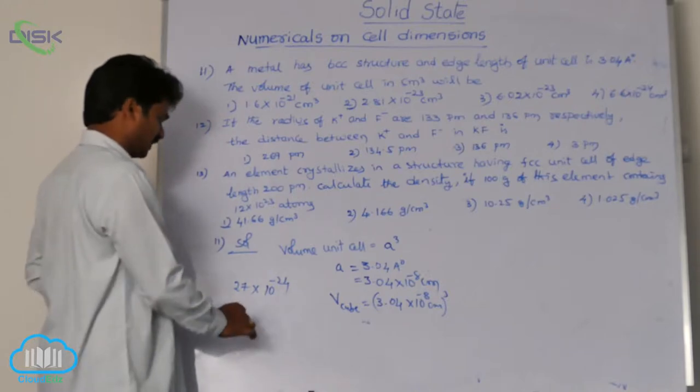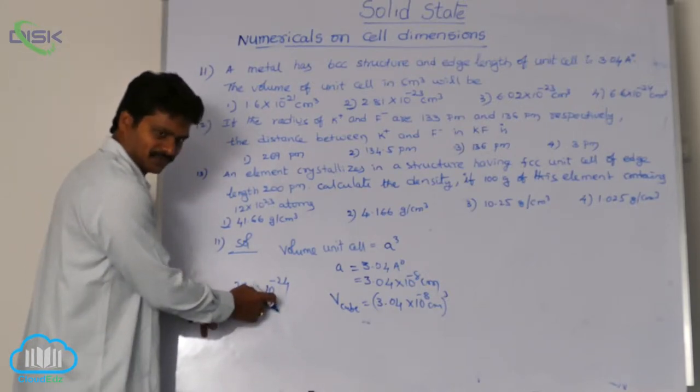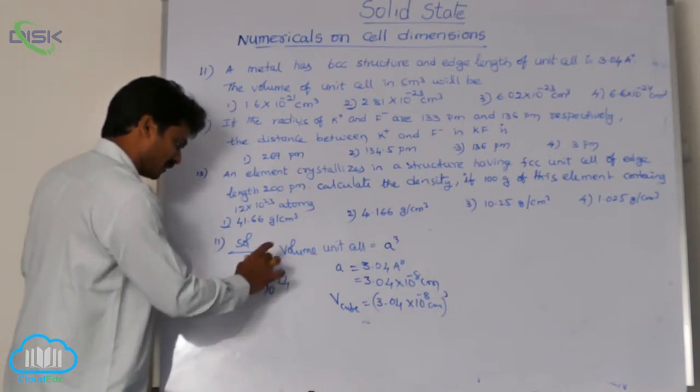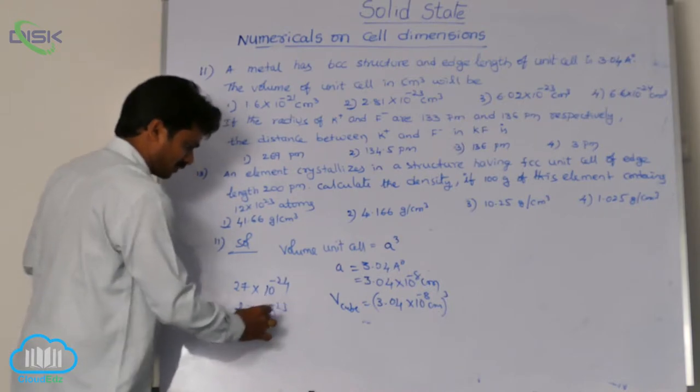24. We can write 27 into 10 power minus 24 as 2.7 into 10 power minus 23.